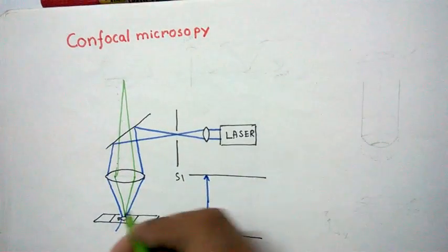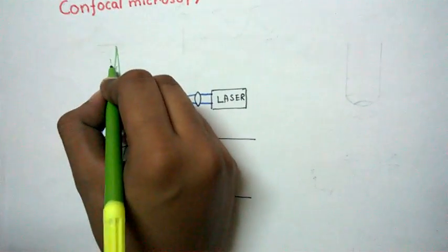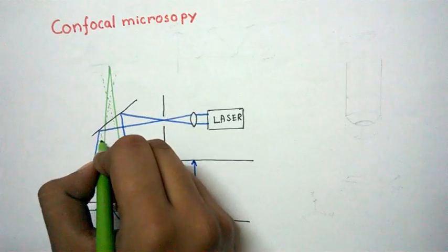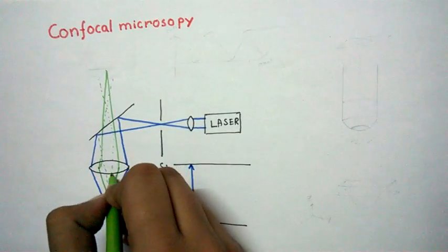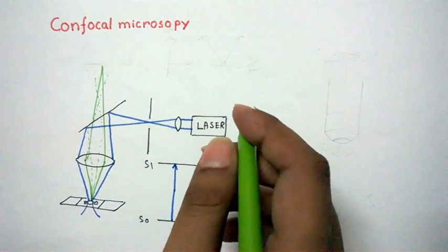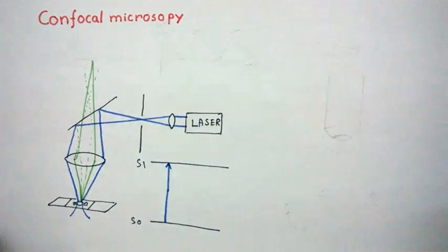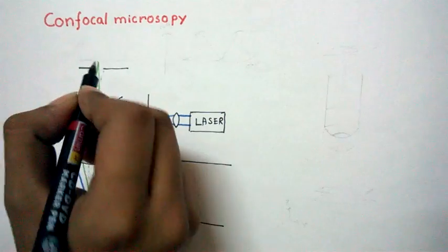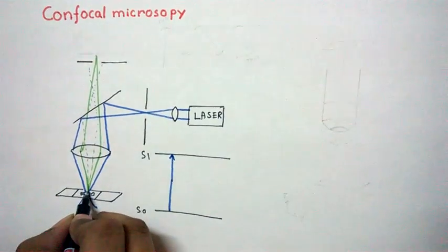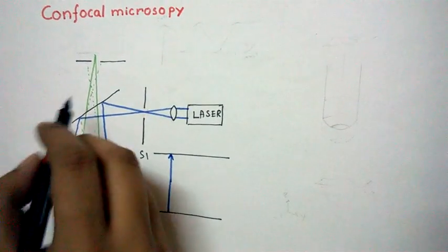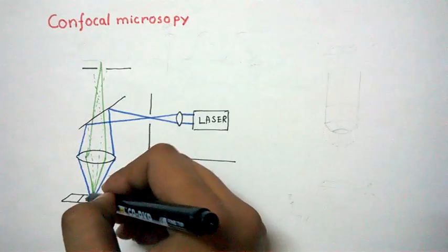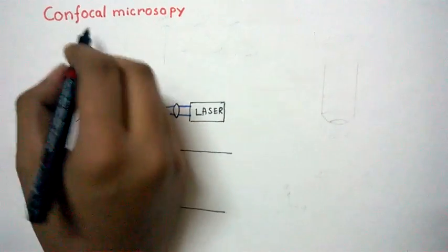Another thing that could happen is that other points in other focal planes could be illuminated by that same excitation light. Light from those other points could also get into the detector, producing a lot of blur — that happens in fluorescence microscopy. But in confocal we have a pinhole which reduces out-of-focus light and only allows in-focus light to pass. The point in the sample is confocal — meaning the same focus — with the pinhole. That is why the name is confocal.